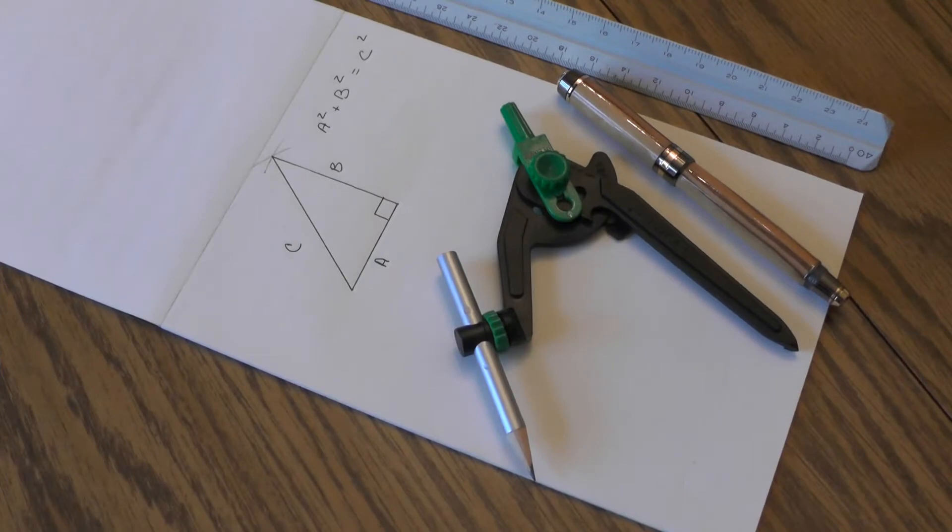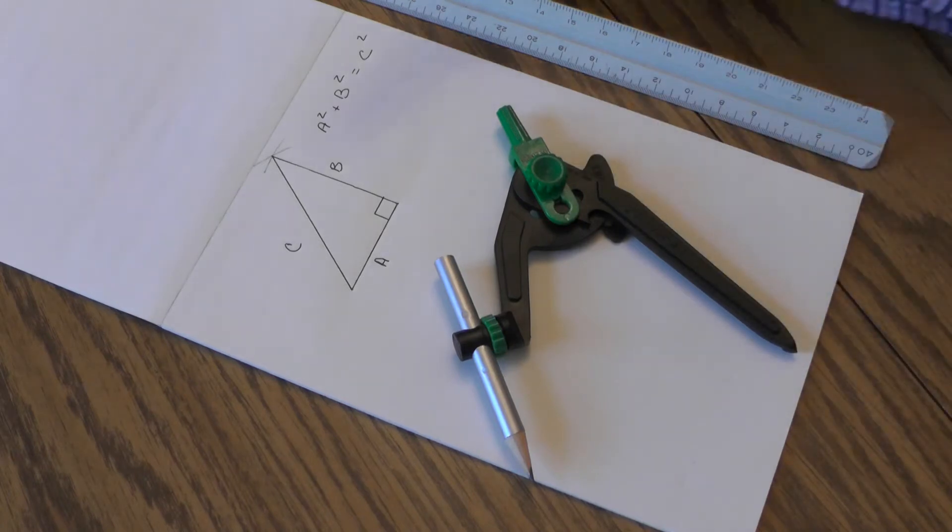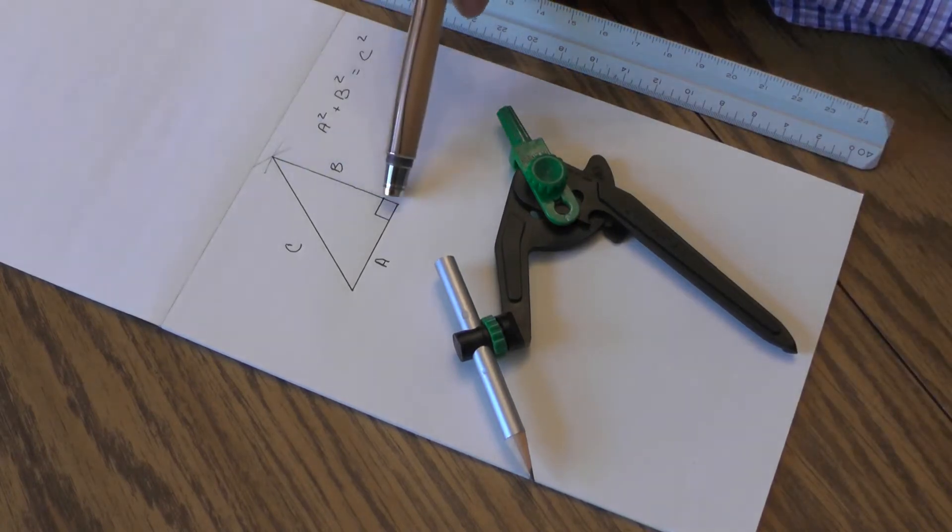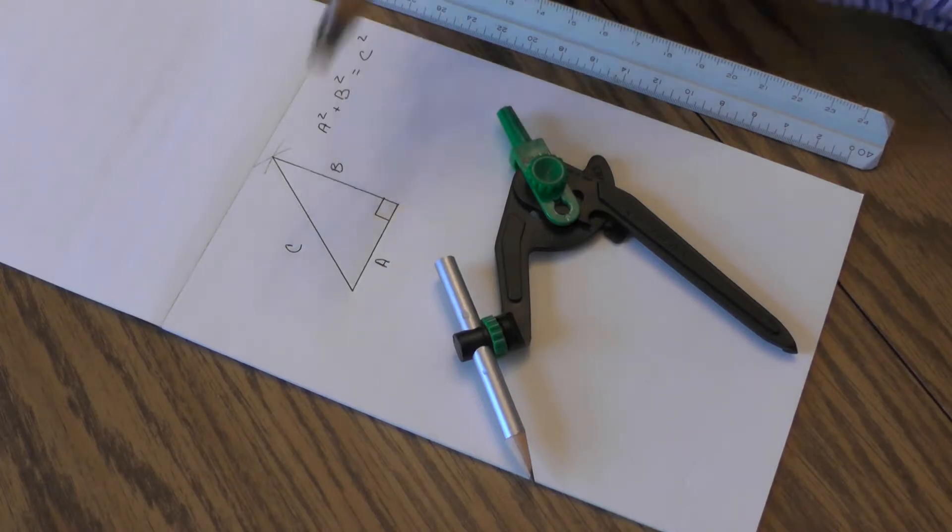Okay, here we are at the tabletop. Pythagoras discovered a rule that has some very practical applications. So here we have a triangle, it has a 90 degree angle and it has sides A, B, and C.